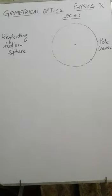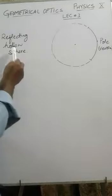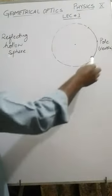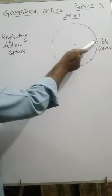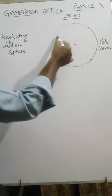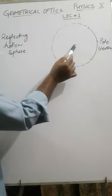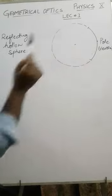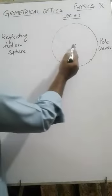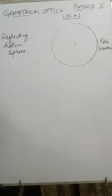This is physics class 10, chapter geometrical optics, lecture number 3. I have shown a reflecting hollow sphere, and a portion of it is known as a spherical mirror. The midpoint of this spherical mirror is known as the pole or vertex. The center of the sphere of which a spherical mirror is a part is known as the center of curvature.